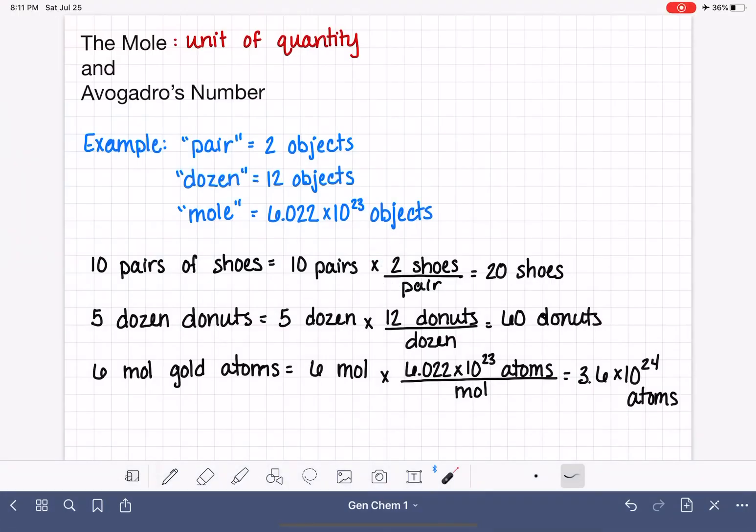So when it comes to doing conversions with the mole, when you're given a quantity with a unit of mole and asked to figure out how many individual items you have, you're going to treat that problem the same way that you would treat pairs of shoes or dozens of donuts. And you're going to use this conversion factor to help you figure out how many actual items you have.